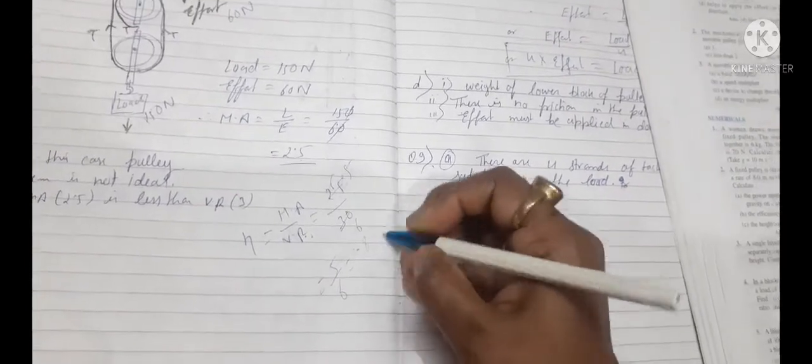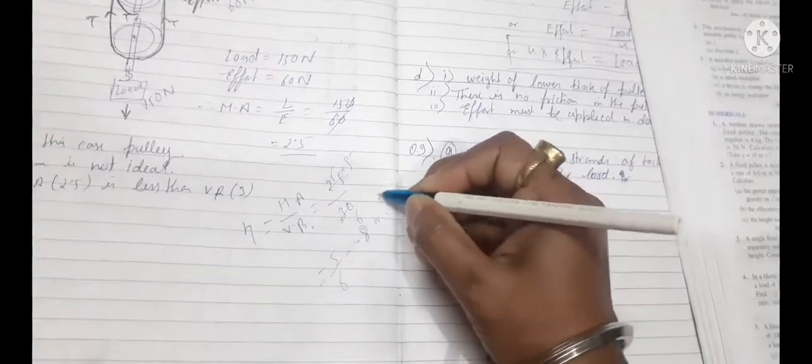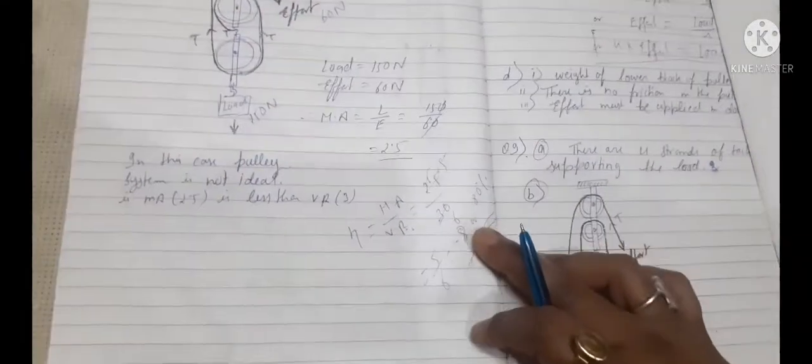It means about 0.8 or 80 percent. So efficiency of this pulley system is 80 percent.